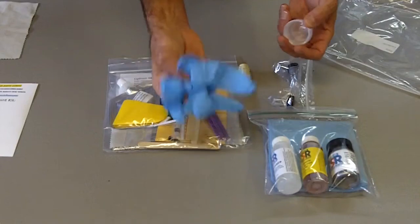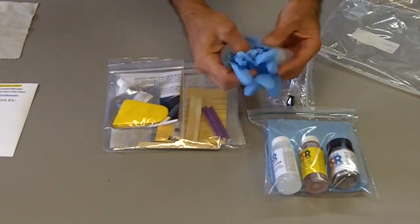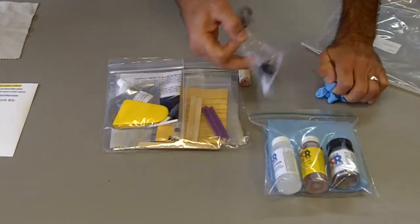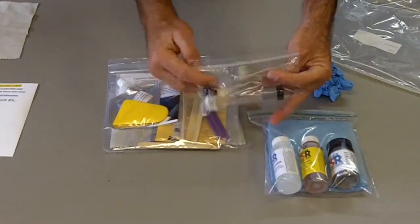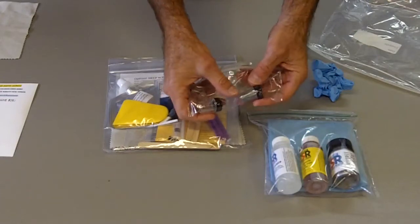There's also a couple nitrile gloves in there. There's also two mini containers. One's got some clear coat in it and one's got some primer.